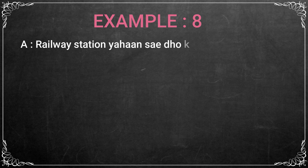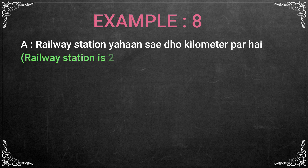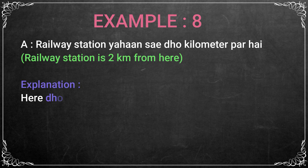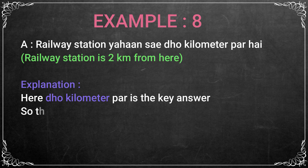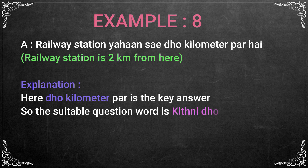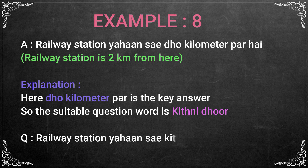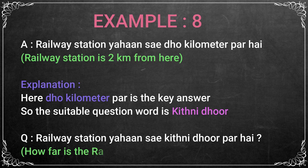Railway station Yehaan se do kilometer par hai. Here, do kilometer par is the key answer. That denotes the distance. So the suitable question word for it is Kitne door. The question is: Railway station Yehaan se Kitne door par hai? — How far is the railway station from here?